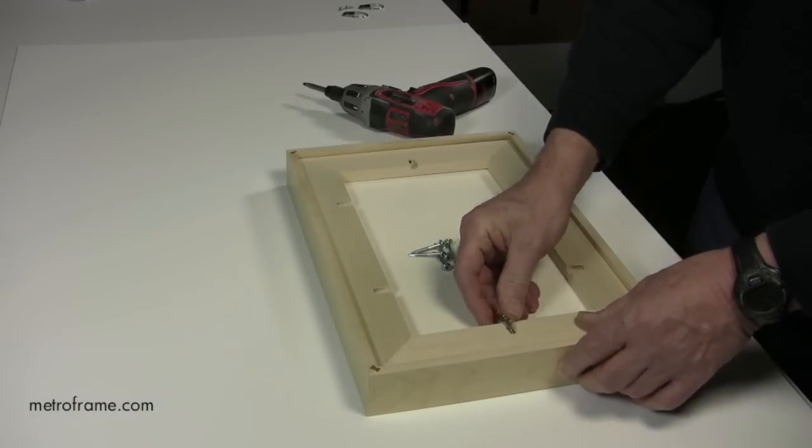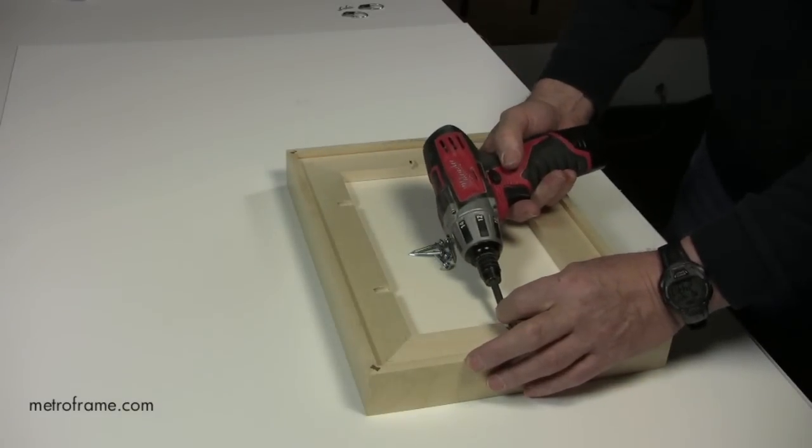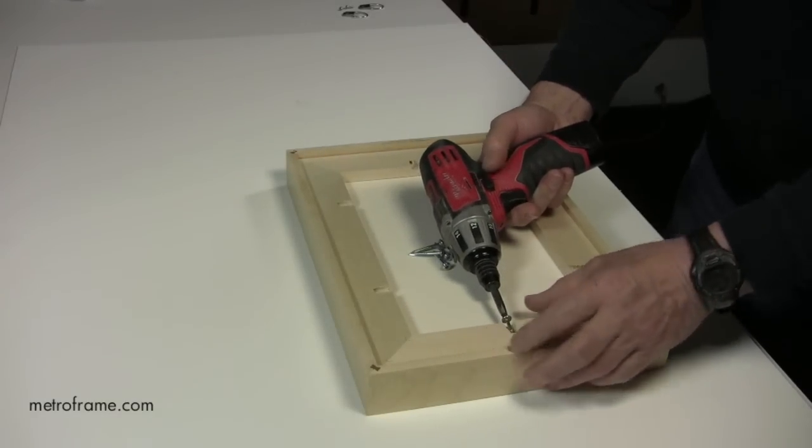The next step is to attach the strainer to the frame. Place the screws in the pre-drilled holes and screw them in with your drill.